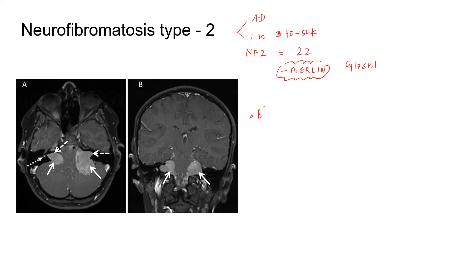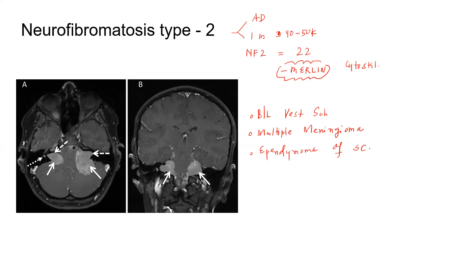In NF2, we are going to get bilateral vestibular schwannomas, multiple meningiomas, and ependymoma — especially ependymoma of the spinal cord. In contrast to other neurocutaneous syndromes, NF2 usually does not have skin manifestations. The image shows bilateral vestibular schwannomas, whose most common location is the cerebellopontine angle, where they produce the ice cream cone appearance.